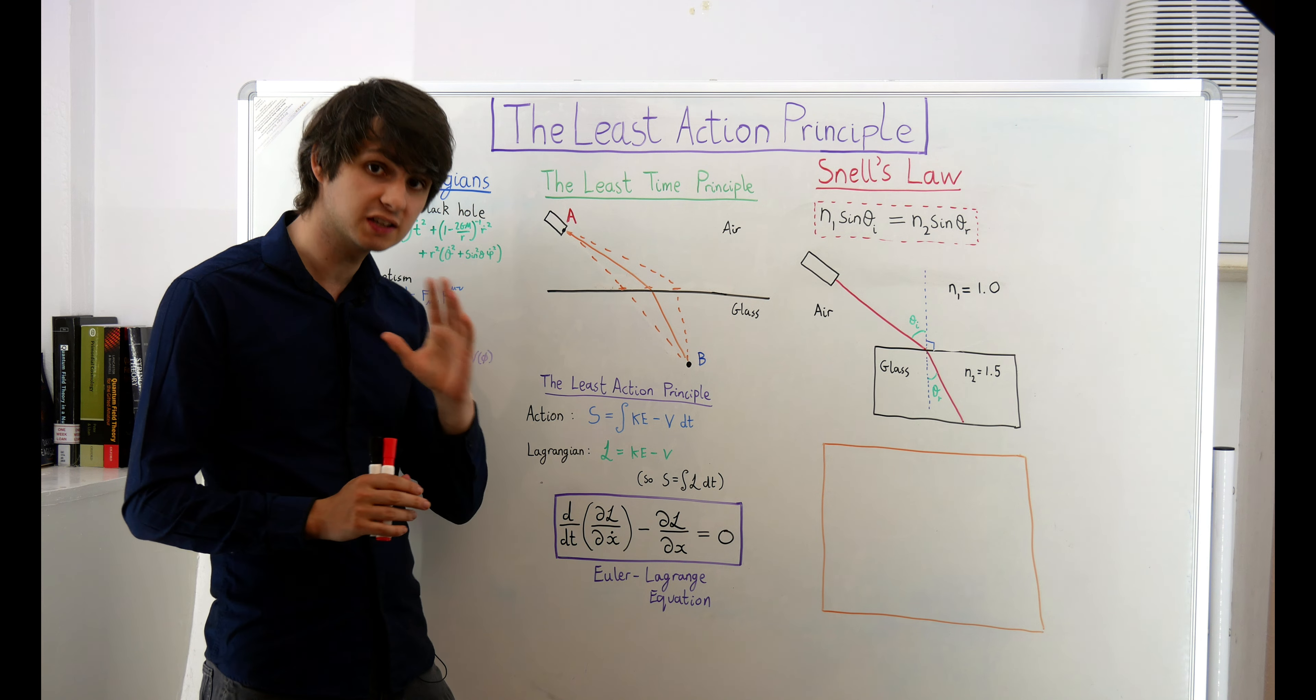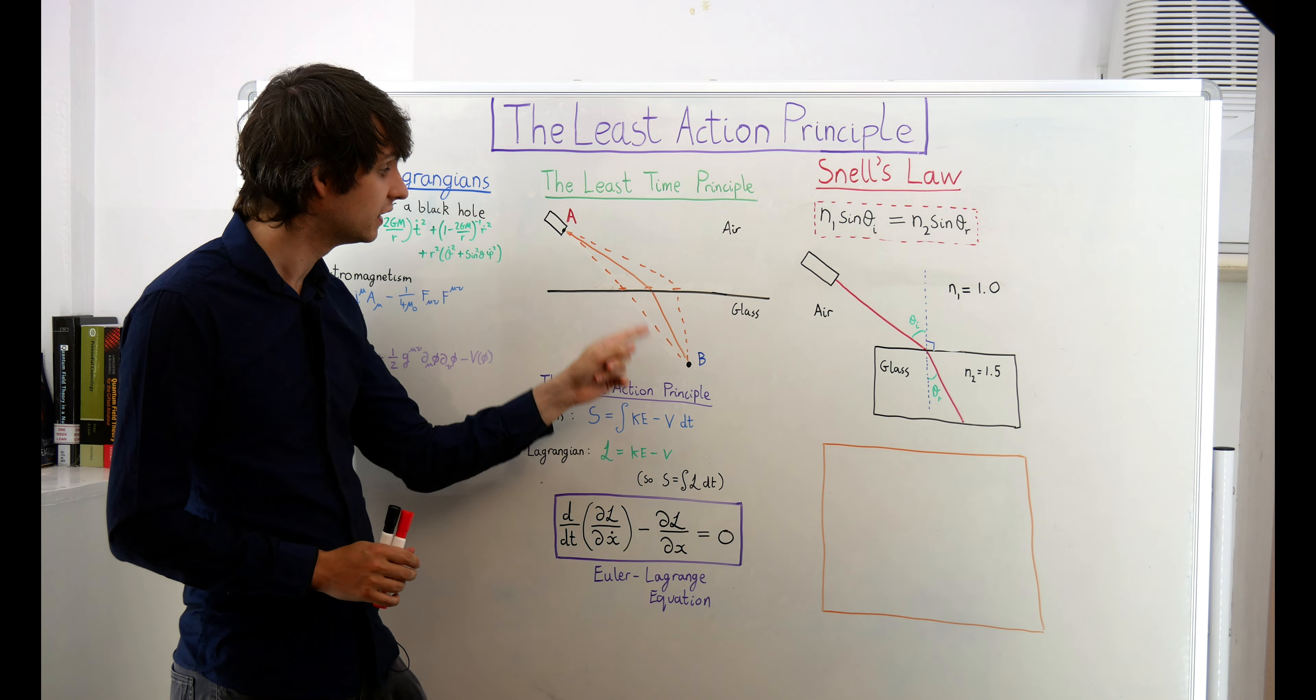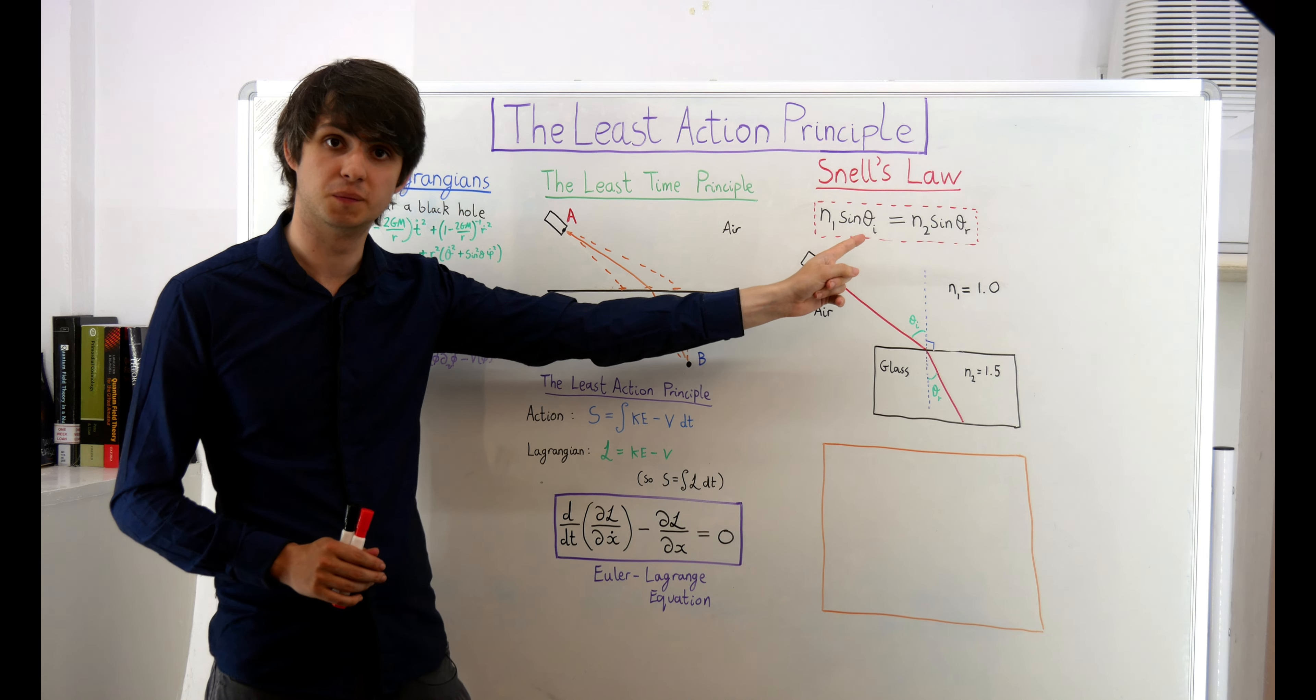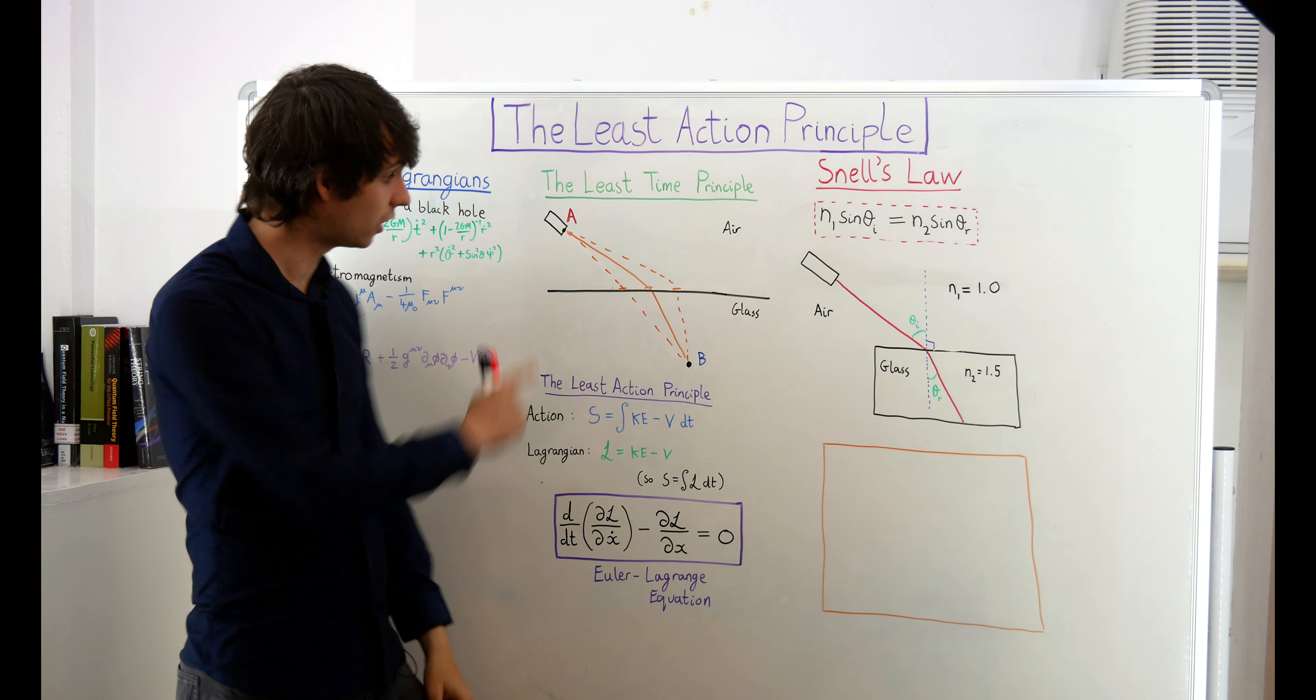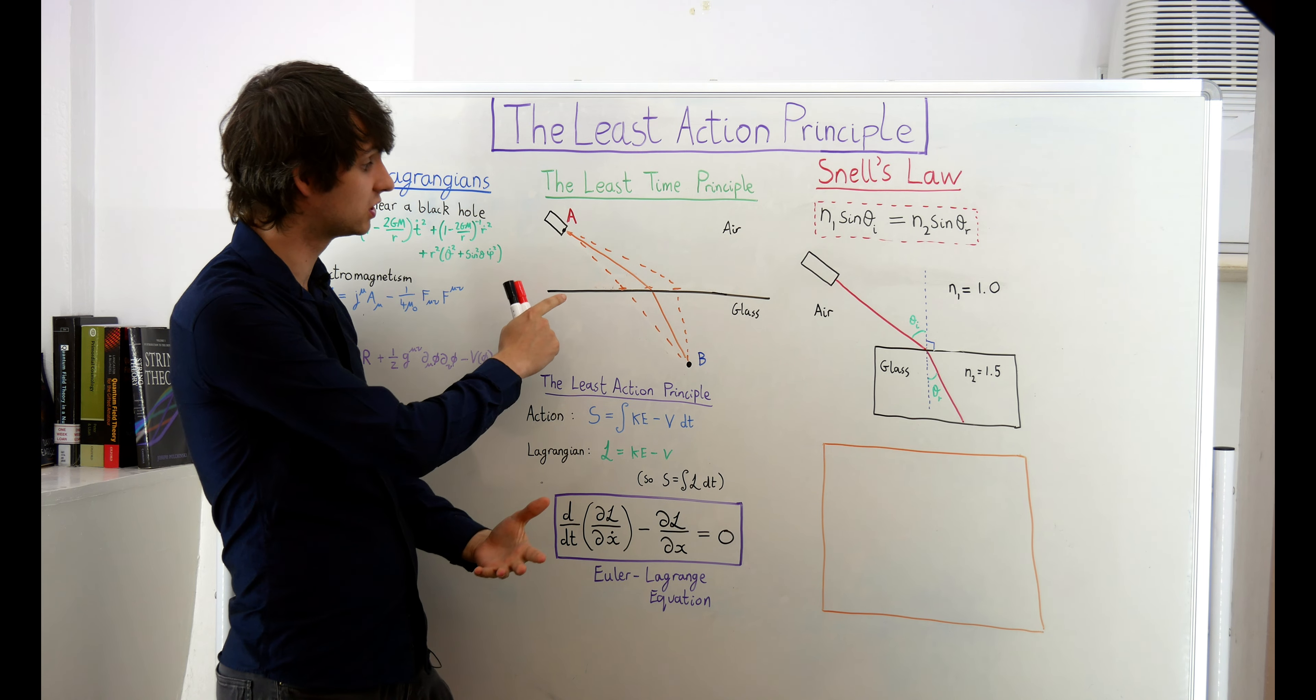Well, it just so happens that the quickest path from A to B is the one that obeys Snell's law. In other words, light rays always seem to take the fastest possible route between two points. This is the principle I mentioned earlier, the one introduced by Fermat and is known as Fermat's least time principle. If we reverse the order of the logic here and assume the least time principle that light always takes the quickest path between two points, then we can derive Snell's law as a consequence.